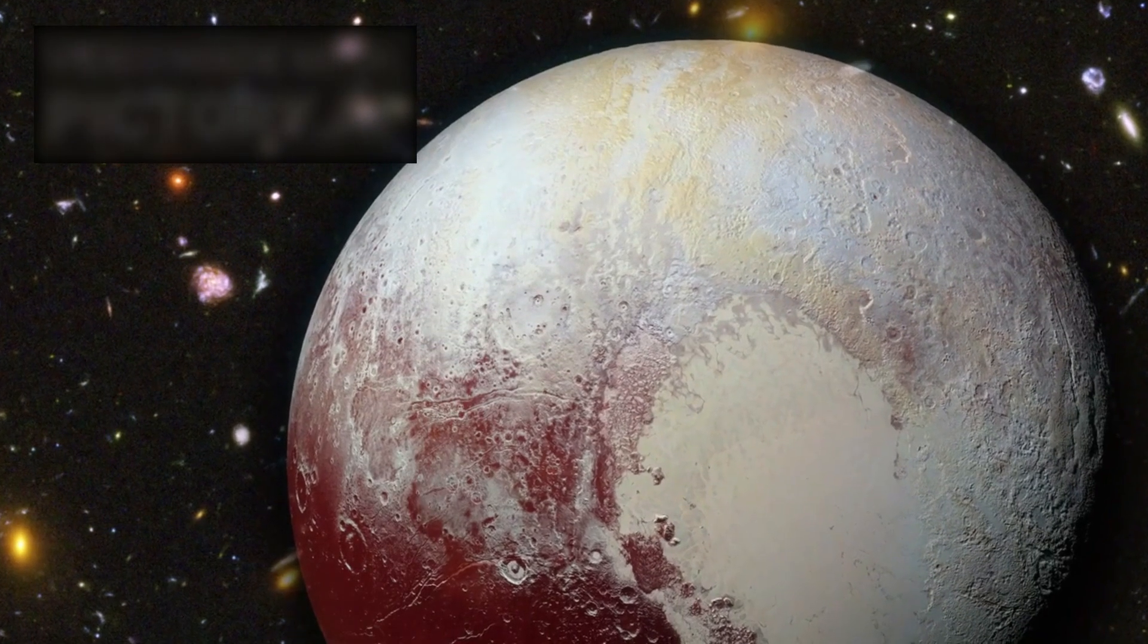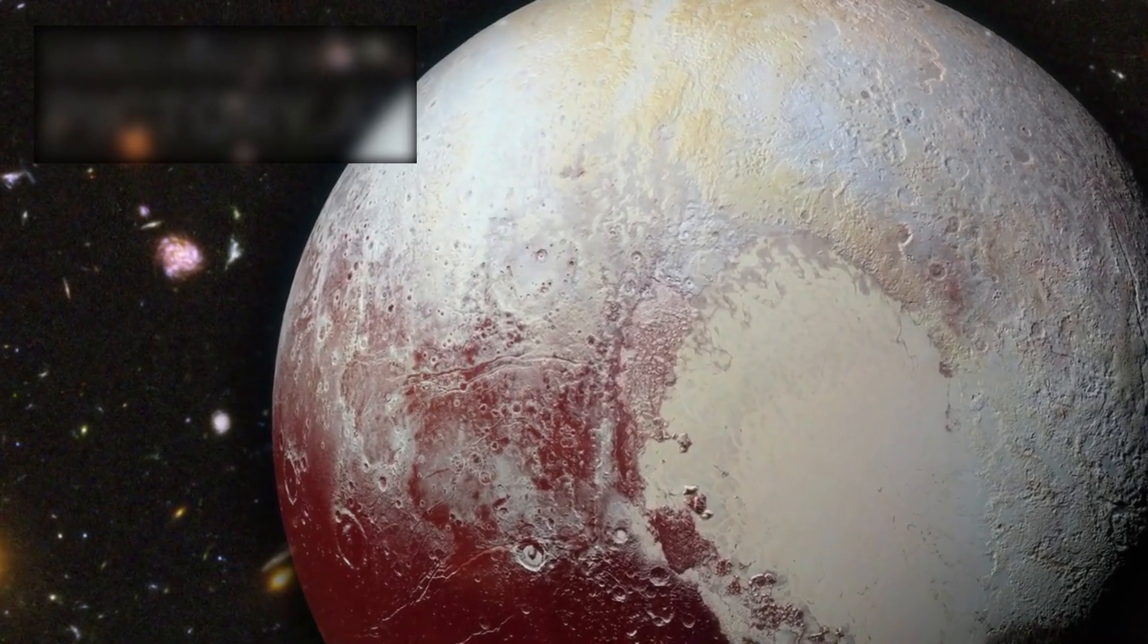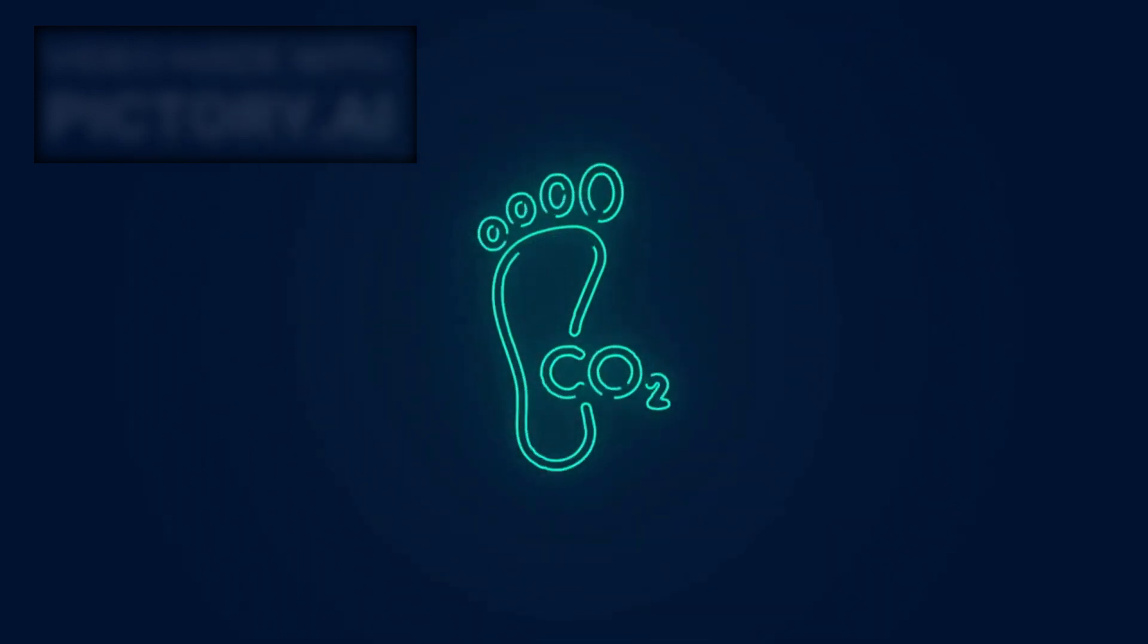Adding another layer to its complexity, Pluto possesses a thin but surprisingly dynamic atmosphere. Mostly composed of nitrogen, with traces of methane and carbon monoxide, Pluto's atmosphere creates a reddish haze.